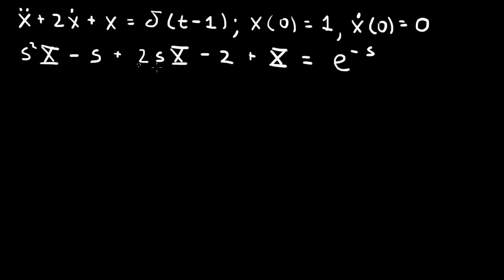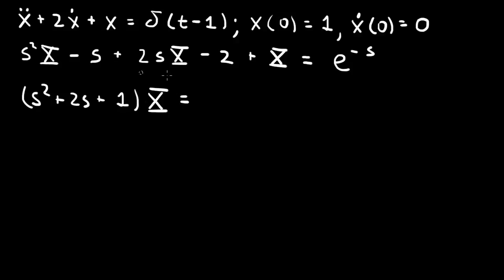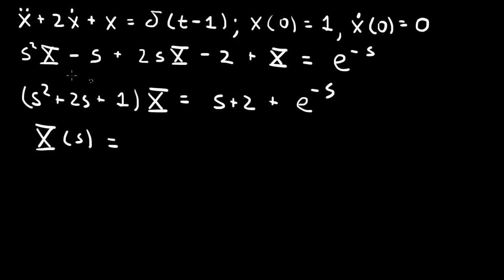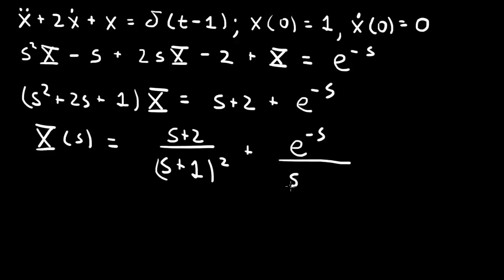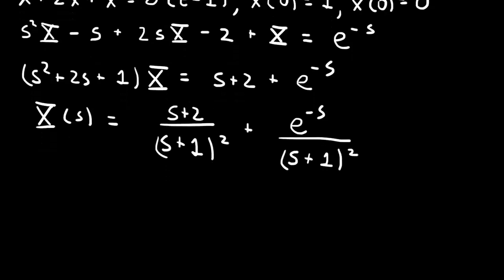That's the transform, so we can factor out X. We have s squared plus 2s plus 1 times capital X, and that equals — throwing the minus s minus 2 to the right-hand side — s plus 2, plus this exponential function e to the minus s. So we can then solve the Laplace transformed equation for X of s. This factors to s plus 1 squared, giving us s plus 2 over s plus 1 squared, plus e to the minus s over s plus 1 squared.